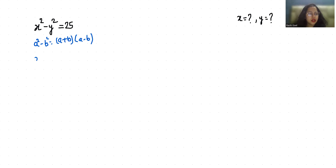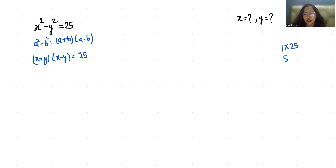So x plus y times x minus y equals 25. Now let's write the factors of 25: 25 is written as 1 times 25, 5 times 5, and 25 times 1.